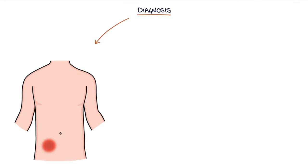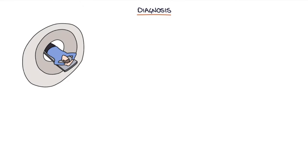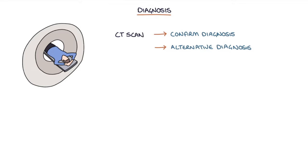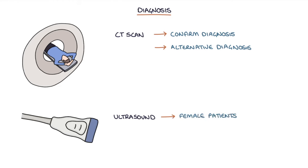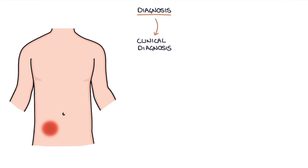Let's talk about the diagnosis. Diagnosis is based on the clinical presentation and raised inflammatory markers. Performing a CT scan can be useful to confirm the diagnosis, particularly where another diagnosis is more likely. An ultrasound scan is often used in female patients to exclude ovarian and gynecological pathology. Ultrasound can also be useful in children where a CT scan is less appropriate due to the dose of radiation. Appendicitis is mostly a clinical diagnosis, meaning it's based on the signs and symptoms rather than a diagnostic test.